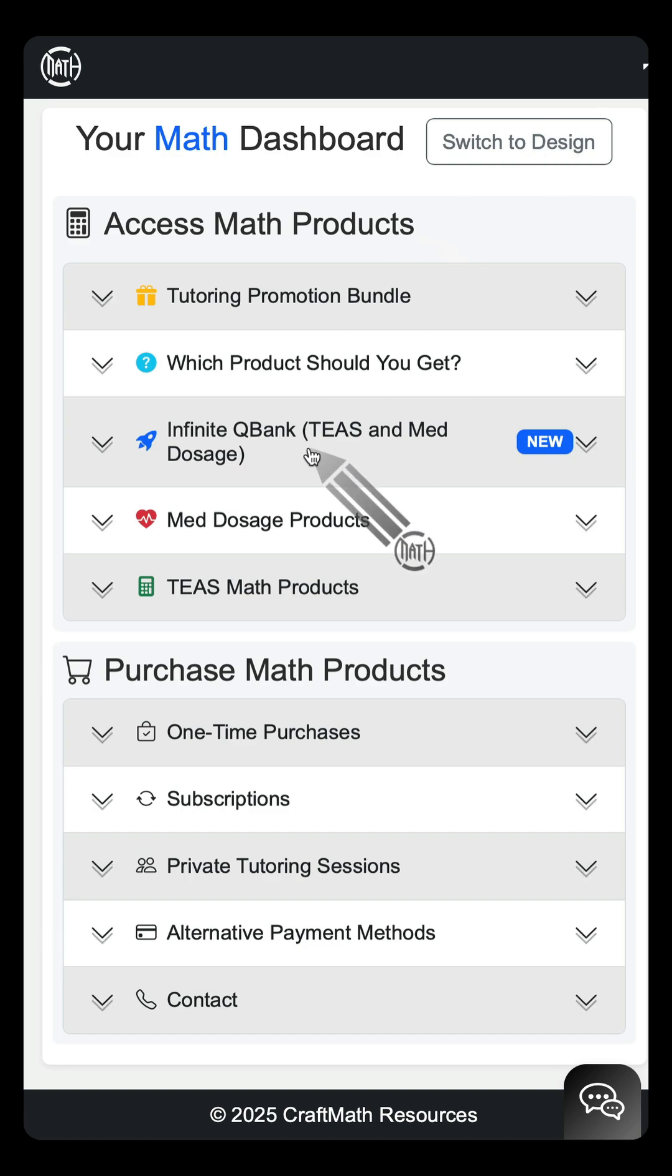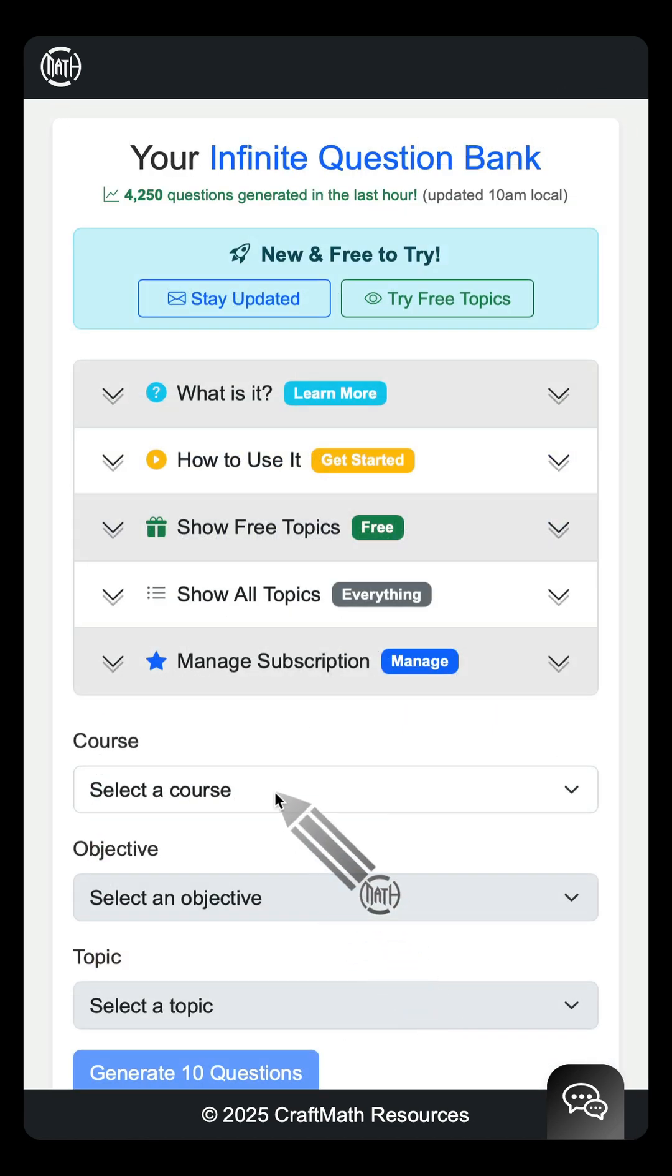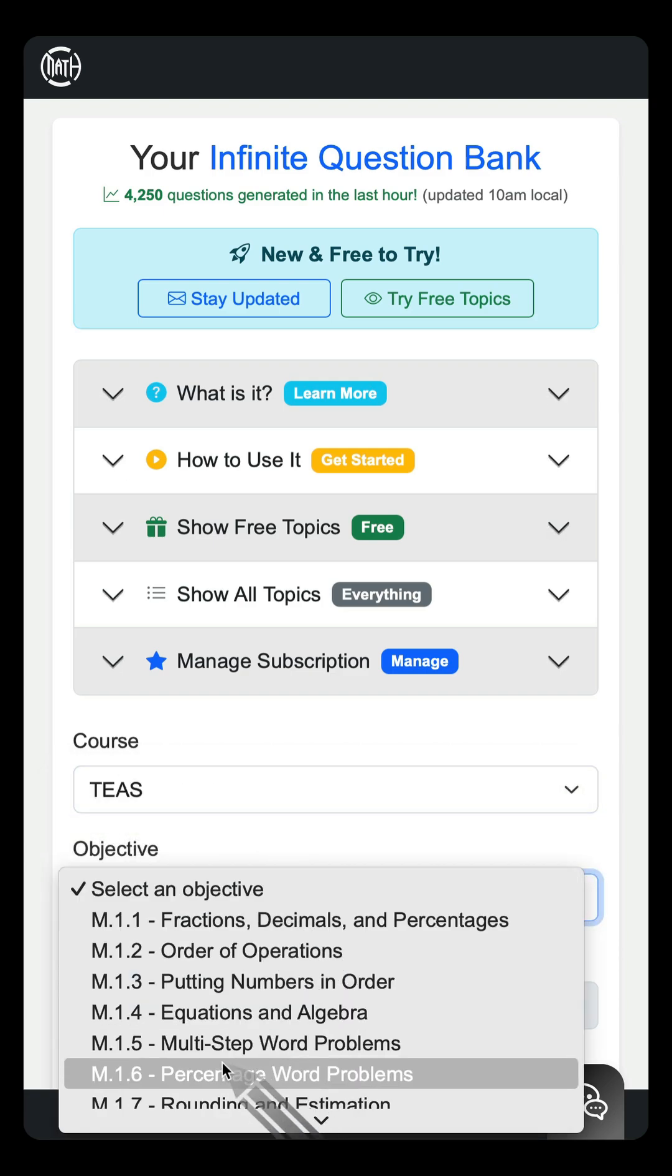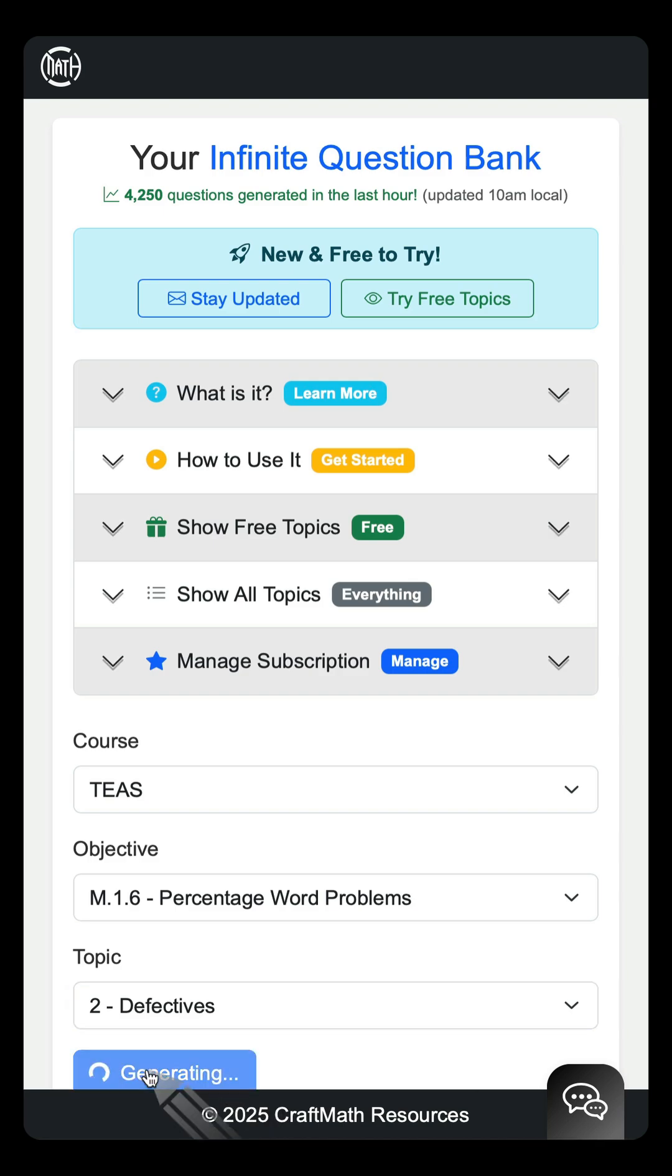And to show you what I'm talking about, let's look at my infinite Q bank. This is where you can generate an infinite number of questions. And again, this is for TEAS. We're going to look at M.1.6. And the topic that we want is defectives. Let's generate those questions.